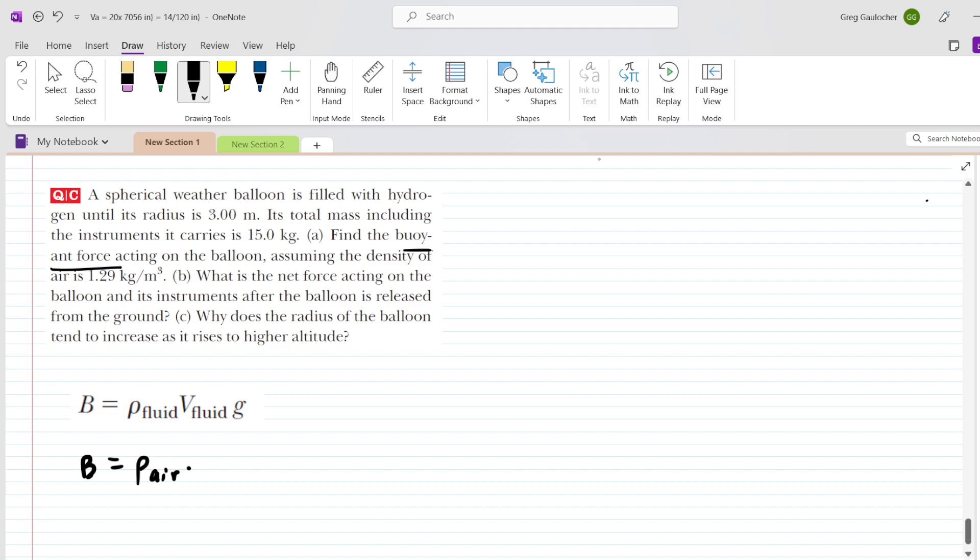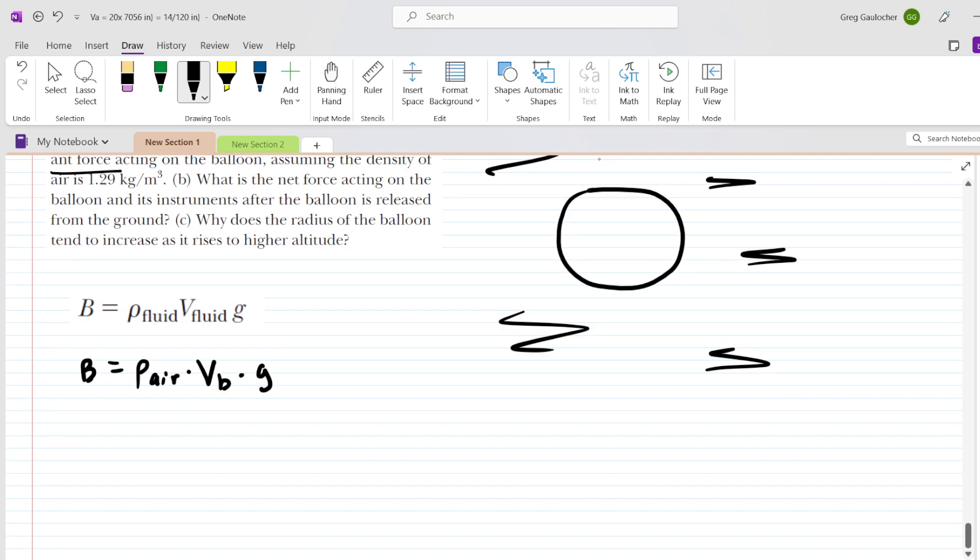For the volume of fluid, it's actually the volume of the displaced fluid. You can imagine that this balloon is completely immersed in the air. It's not as though a part of the balloon is sticking above the air. Since the balloon is completely immersed, the volume of air displaced is the same as the volume of the balloon. So it's important to understand that we're going to be using the volume of the balloon in this calculation.